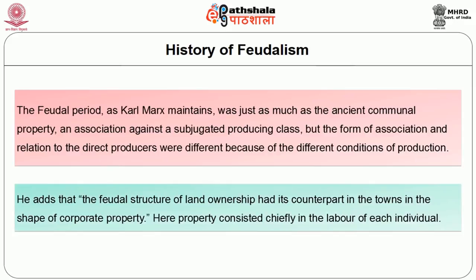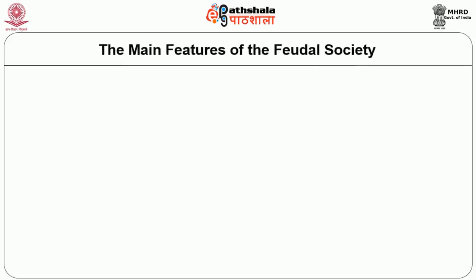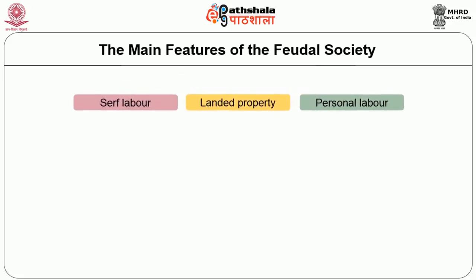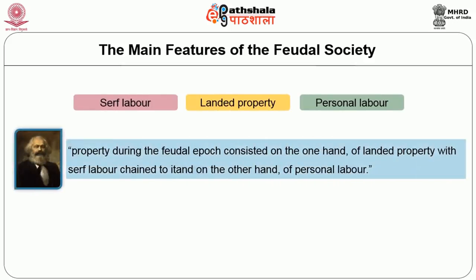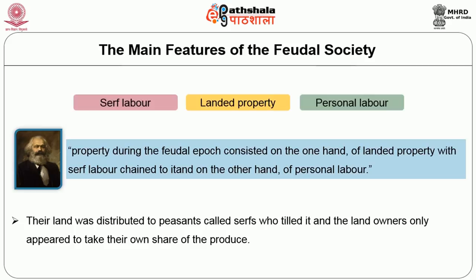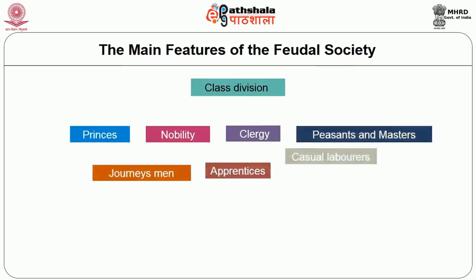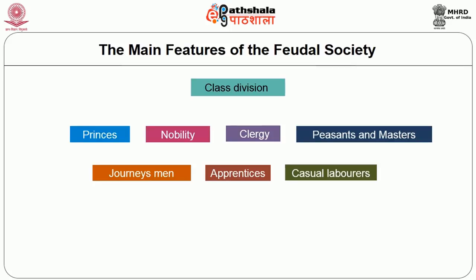The feudal structure of land ownership had its counterpart in the towns in the shape of corporate property, where property consisted chiefly in labour of each individual. The key features of the feudal period were serf labour, landed property and personal labour. Property during the feudal epoch consisted on the one hand of landed property with serf labour chained to it, and on the other of personal labour. There were individuals who owned land — landlords staying in cities — while the land was distributed to peasants called serfs who tilled it. Class division was between princes, nobility, clergy, peasants, masters, journeymen, apprentices and casual labourers in the town.